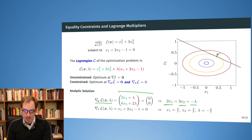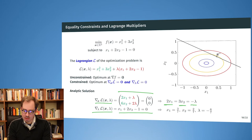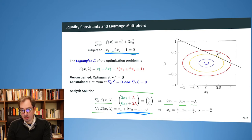Now I derive my Lagrangian by lambda and get out x1 plus 2x2 minus 1 equals 0. This is really interesting because what we effectively get out is exactly my equality constraint. By the way I constructed the Lagrangian, if I take the derivative by lambda, I get back exactly my equality constraint, and by setting that derivative to 0 I enforce the constraint.